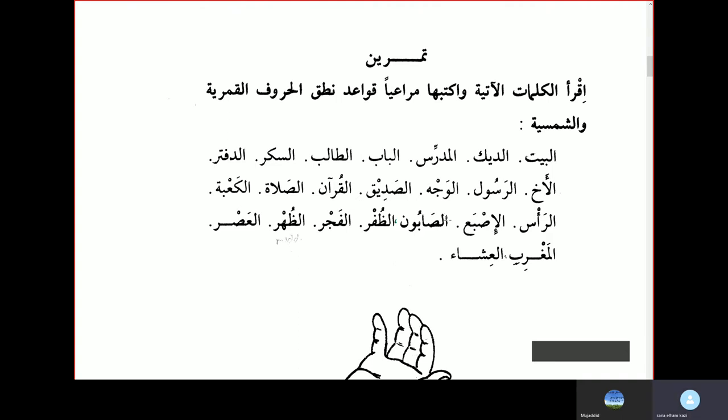Al-Baitu — this is a Lunar letter, so you add Al: Al-Baitu, the house. Ad-Diku — this is a Solar letter, so you say Ad-Diku, the rooster. Al-Mudarrisu, the teacher. Al-Babu, the door. Al-Talibu, the student. Al-Sukkaru, the sugar. Al-Daftaru, the notebook. Al-Akhu, the brother.